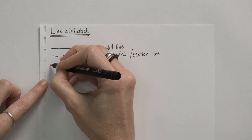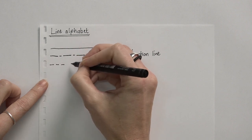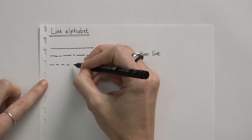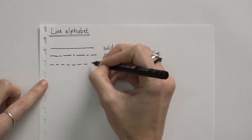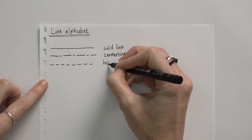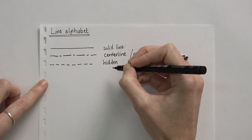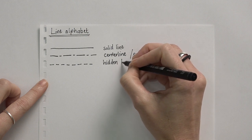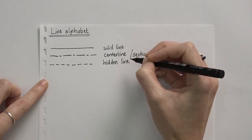Third, we have a hidden line, and a hidden line is just equally spaced dashes. A hidden line is used when we want to draw in any hidden information into a drawing.